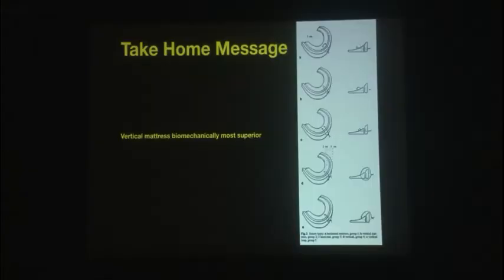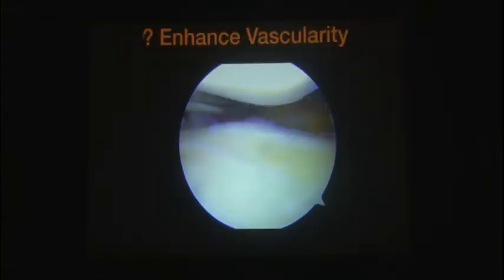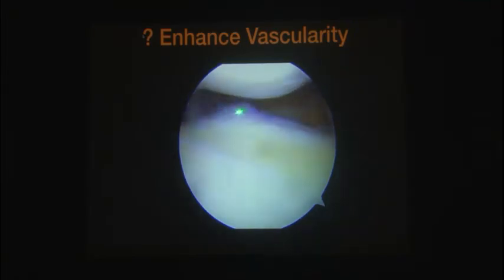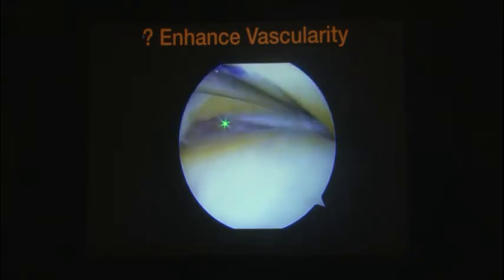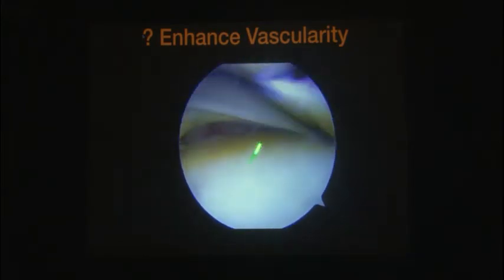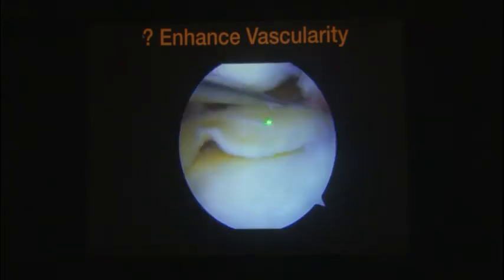Vertical mattress sutures are the way to go. To enhance vascularity, the first step is rasping. Have a good rasp and rasp the synovial surface first, then the meniscal surface. The meniscus has two surfaces — the capsular surface and its body surface — so rasp both. Synovial rasping is important because it creates a cellular response. This has to be stressed because you would not otherwise be doing it routinely.